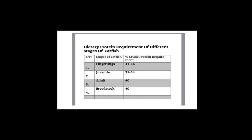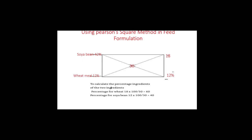We are starting by looking at the nutritional requirement of the fish — what does the fish need in order to grow fast? We are going to calculate the crude protein requirement of the fish. In this example, we are going to select a stage of catfish — let's choose fingerlings — and calculate its crude protein using the Pearson Square method.